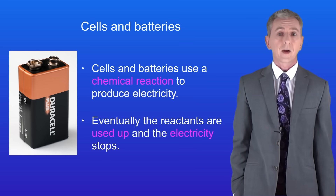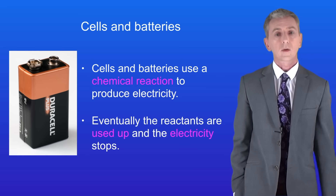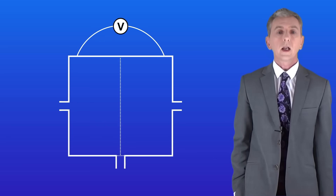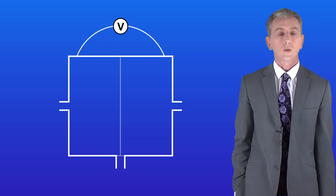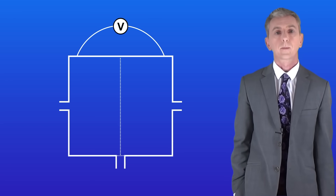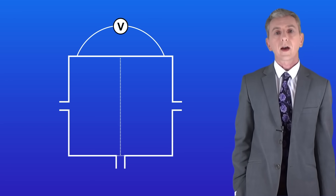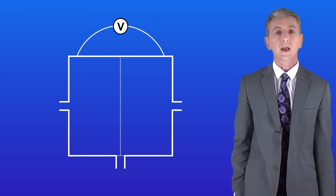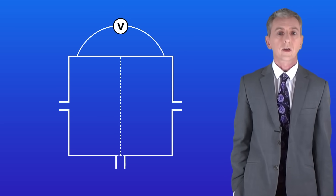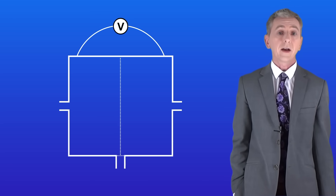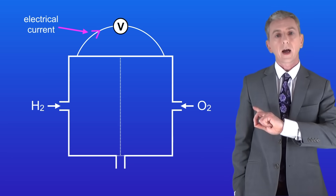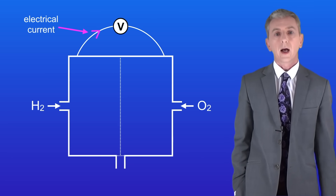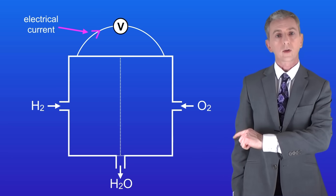Here is a very simplified diagram of a fuel cell. In a fuel cell we react a fuel such as hydrogen with either pure oxygen or air. Inside the fuel cell a chemical reaction takes place producing an electric current. For the hydrogen fuel cell the only waste product is water, shown here alongside the hydrogen and oxygen inputs.